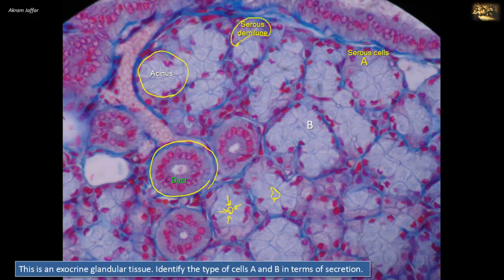The cells of the mucous acinus synthesize and secrete mucigene granules containing extensively glycosylated protein. This secretion product is water-soluble and lost during routine tissue preparation, so the cytoplasm of mucous cells appears empty in most conventionally stained sections — represented in cell group B. Note that the nucleus of the mucous secreting cell is usually flattened against the base of the cell, because of the large amount of stored product in the apical cytoplasm, in contrast to the rounded nucleus of the serous secreting cell.